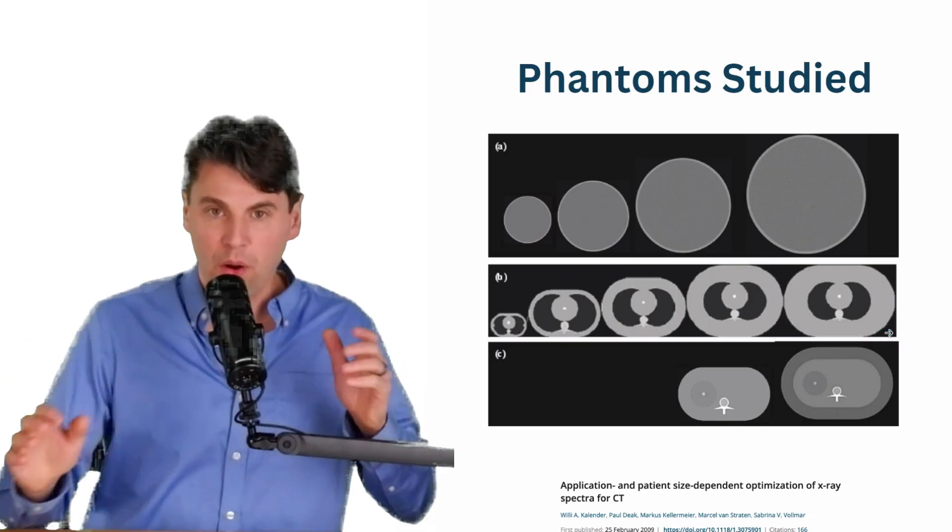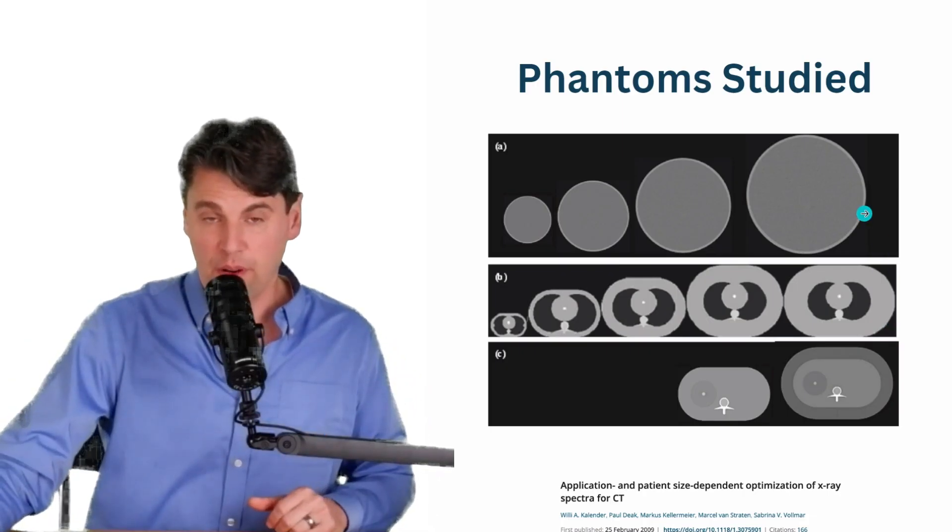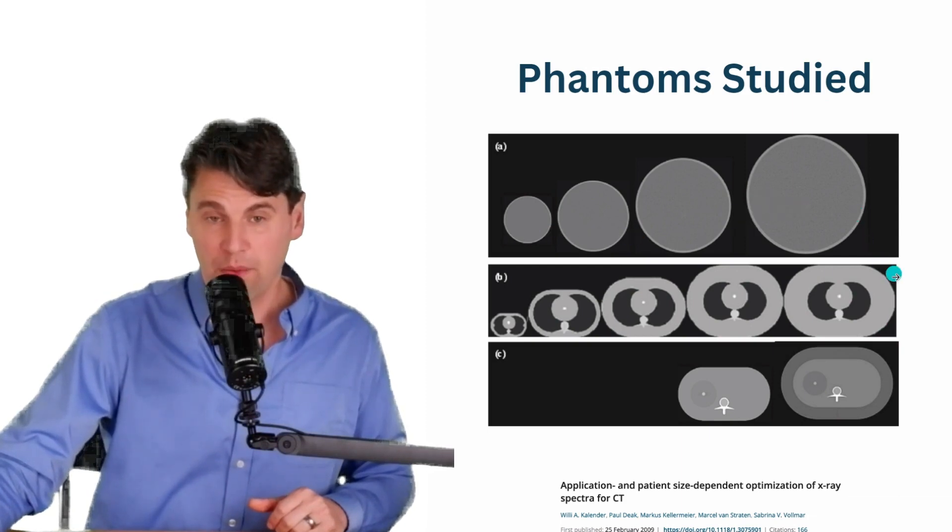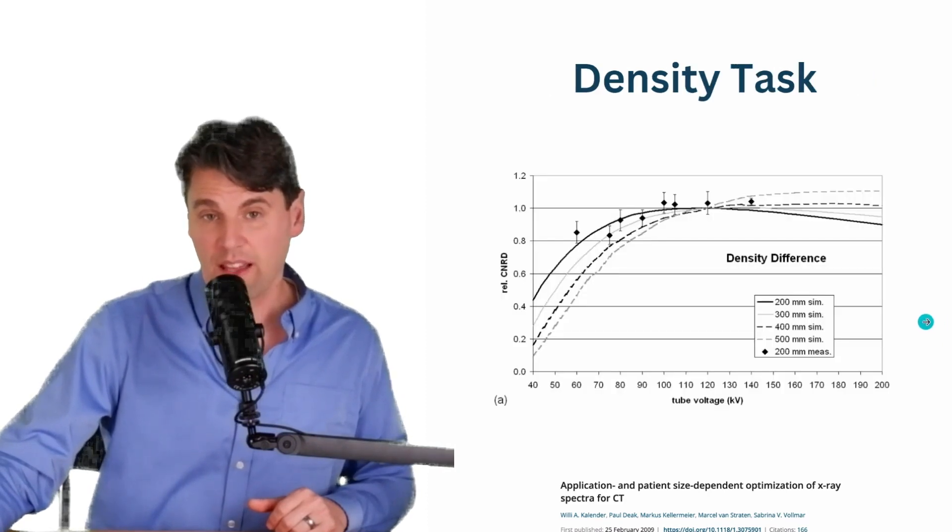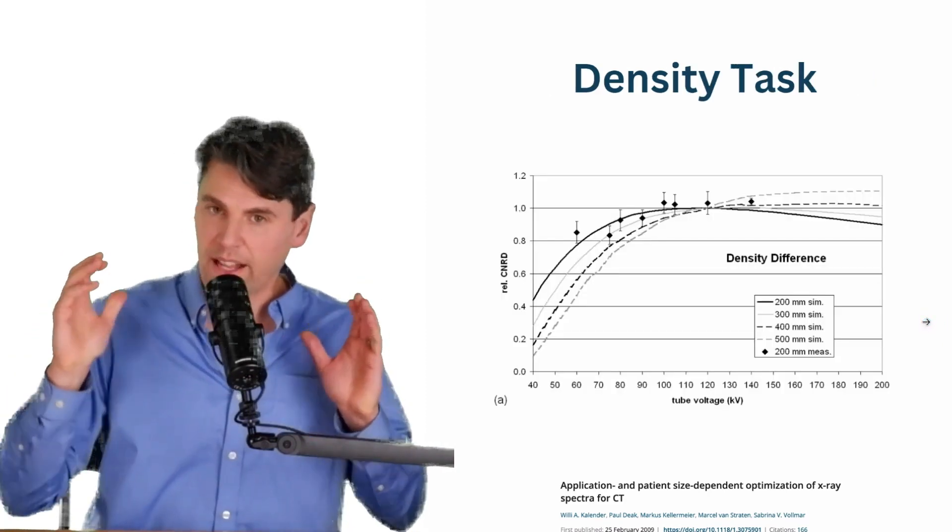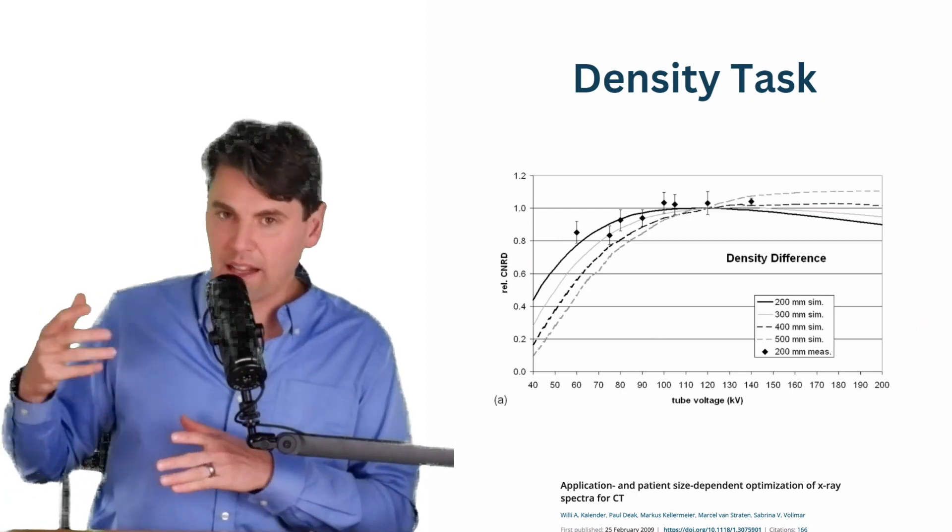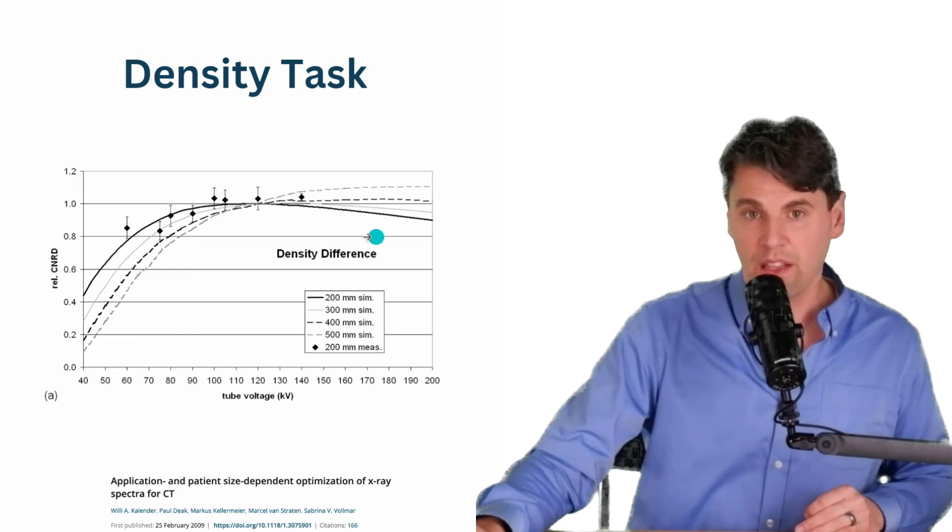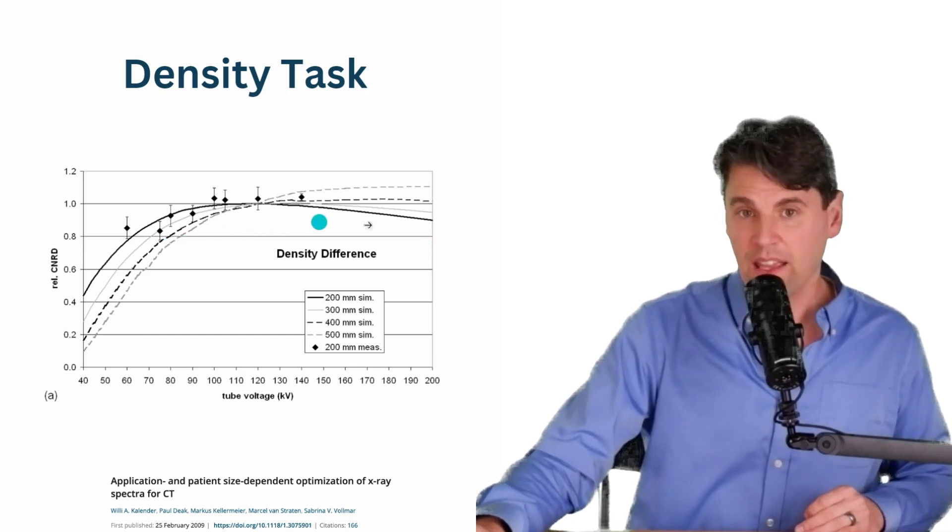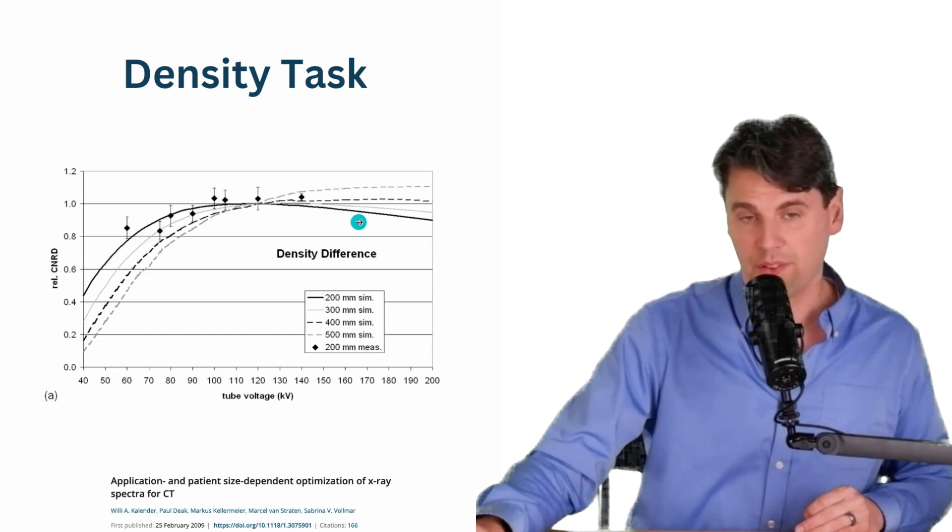In the first paper, what they looked at was a number of different phantoms, such as general homogeneous phantoms and phantoms that looked kind of like a chest with additional fat around the outside. And there were different tasks that they looked at. So they looked at tasks, which is basically like a density task. So not including the iodine or calcification, they looked at different sizes. So each of these different curves is a different size. And then the points are some measurements that were made for one of the smaller sizes.